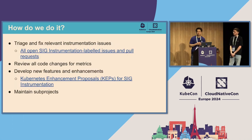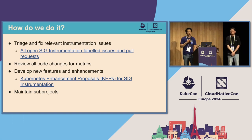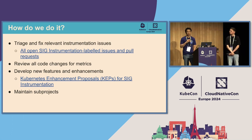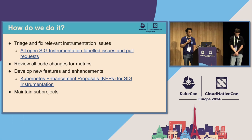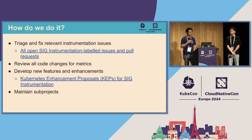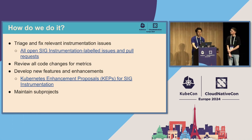We run a biweekly SIG instrumentation meeting. On alternating weeks, we run a triage session where we go through GitHub issues and pull requests and ensure that they are addressed. We review code changes and develop new features. So if you have any ideas on how to improve instrumentation observability, you should join our sessions. We also maintain the various subprojects, and Damien will go into that a little bit later.